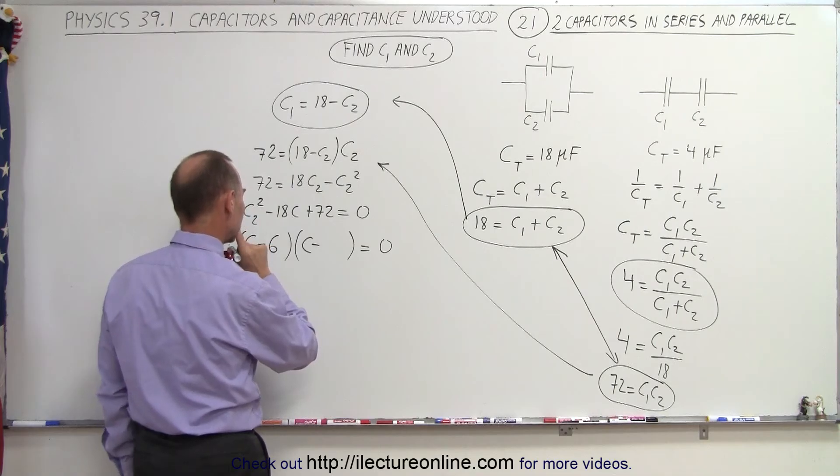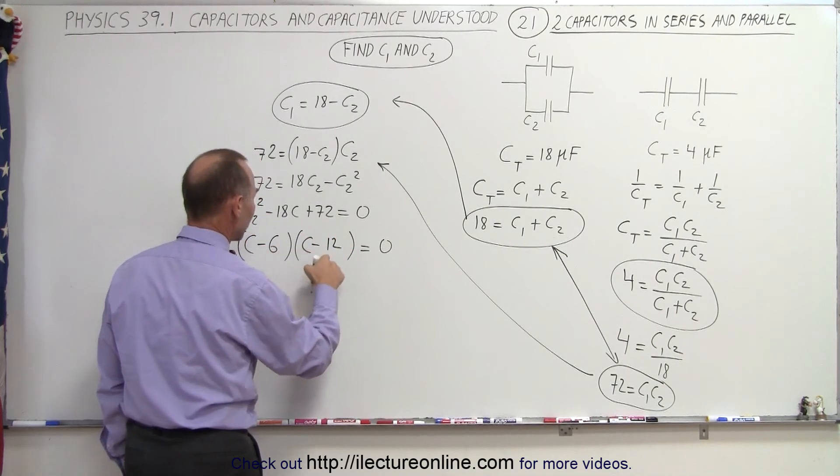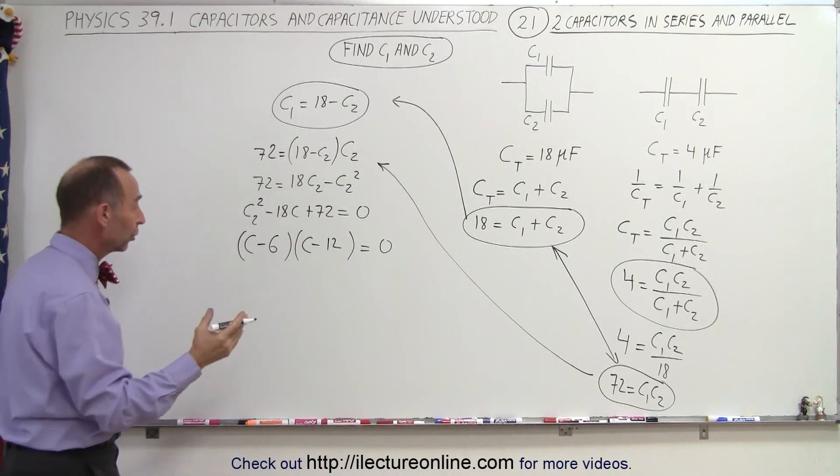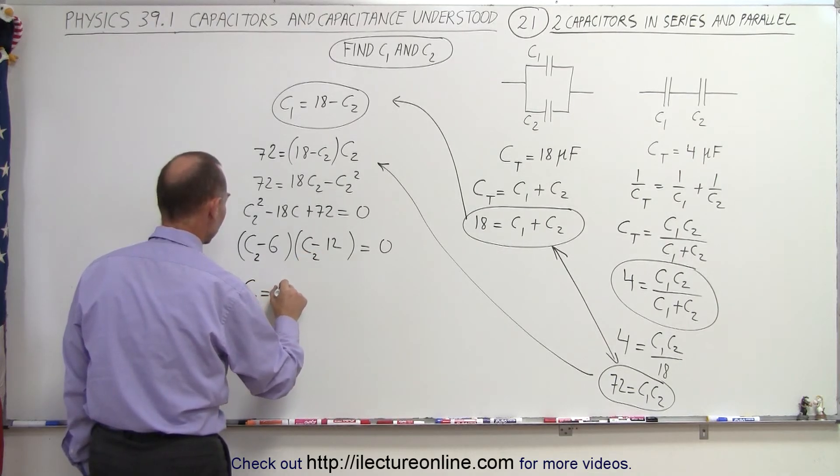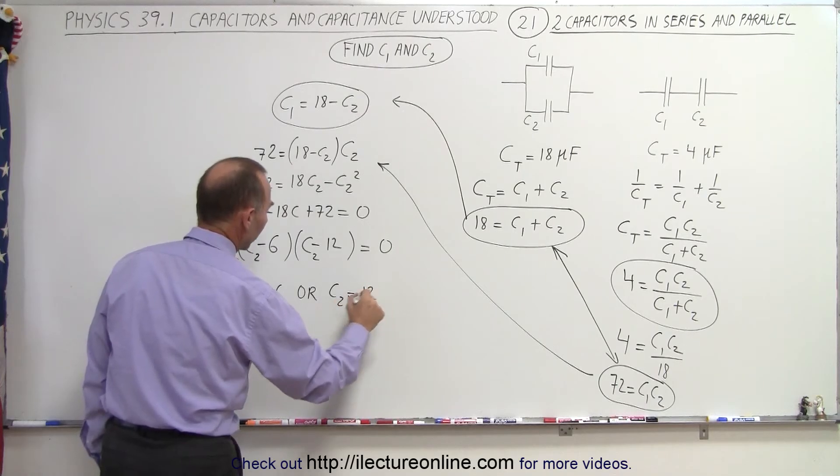Six, six and eight, no, not six and eight, six and 12, because six times 12 is 72, and six plus 12 is 18. That is it. So conclusion, and this should be C2, of course, that means that C2 is equal to six, or C2 is equal to 12.